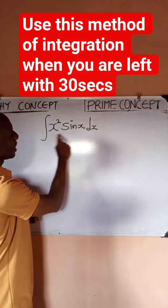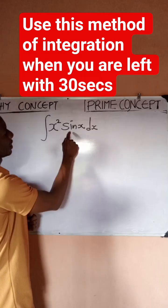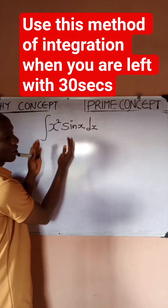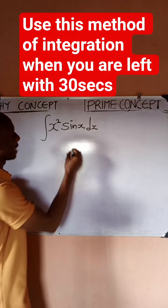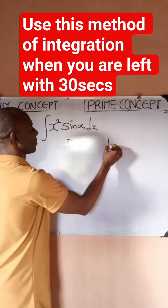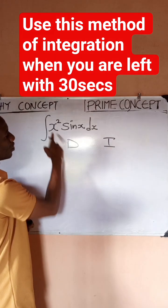This is a problem of integration by parts. You can see you have a product of two functions: x squared and sine x. When you have something like this, a simple thing to do is to use the DI method.